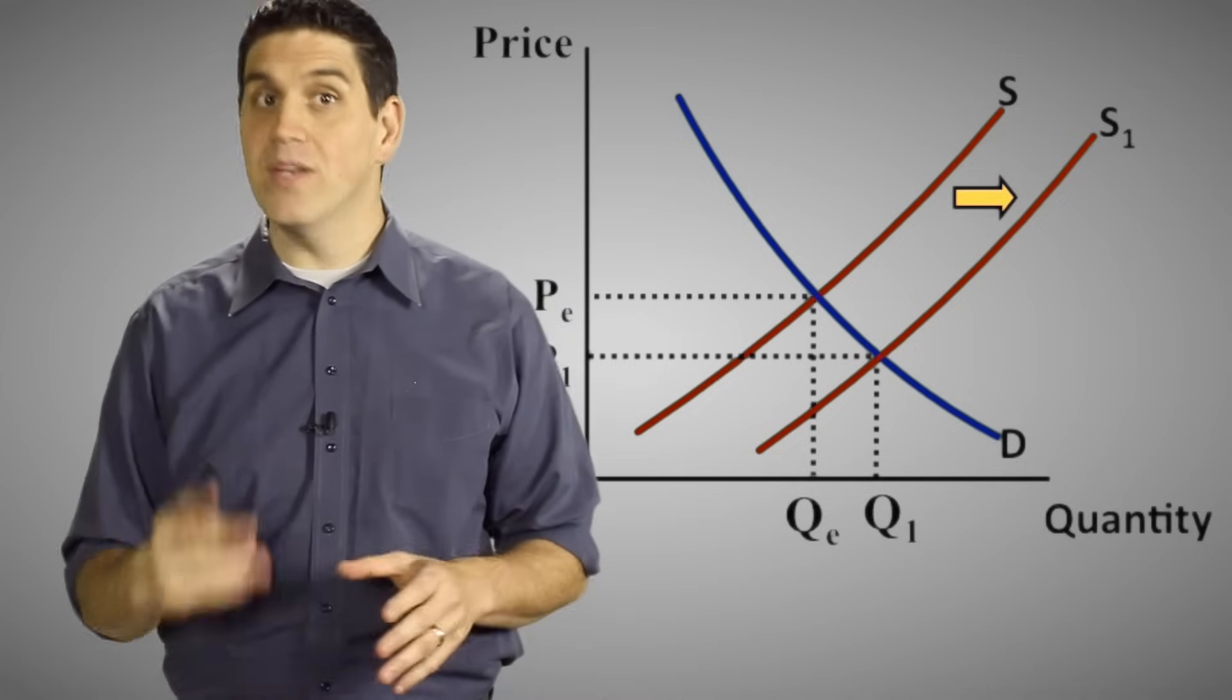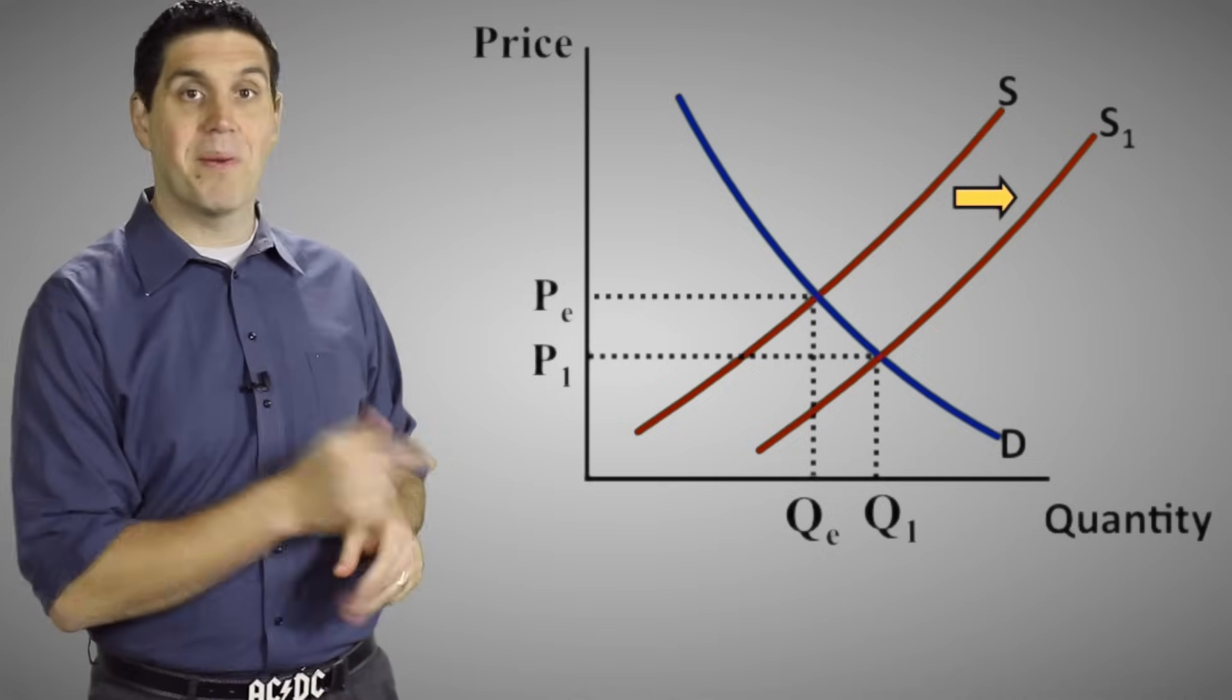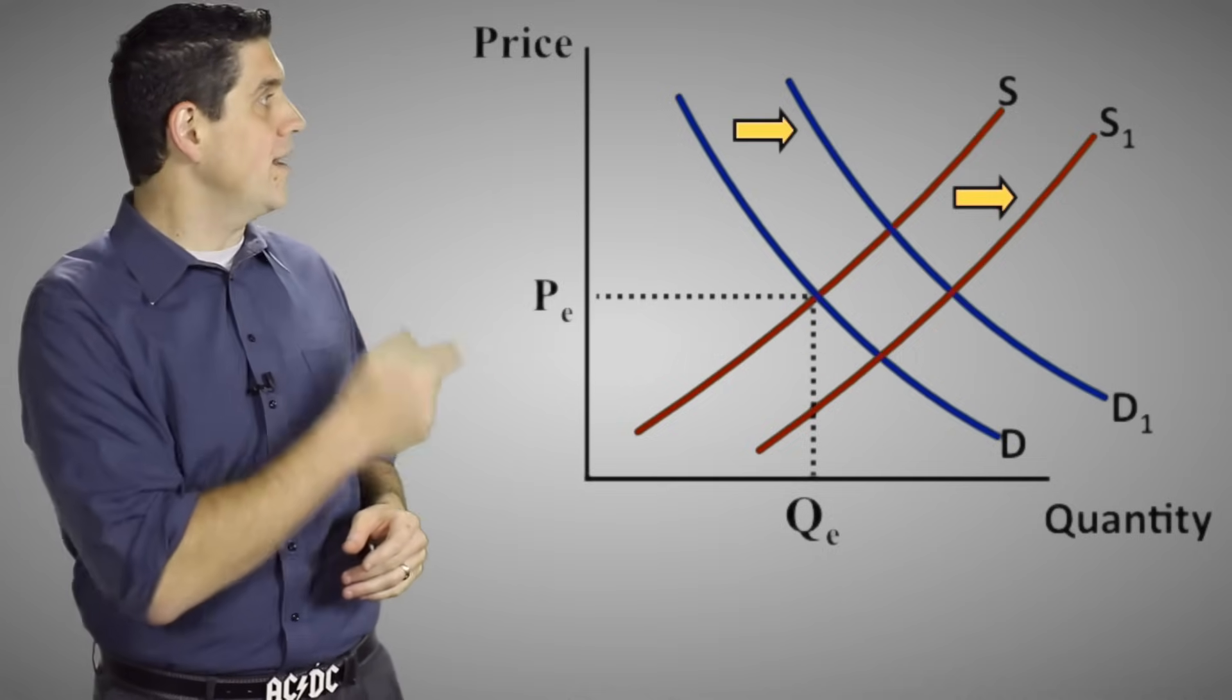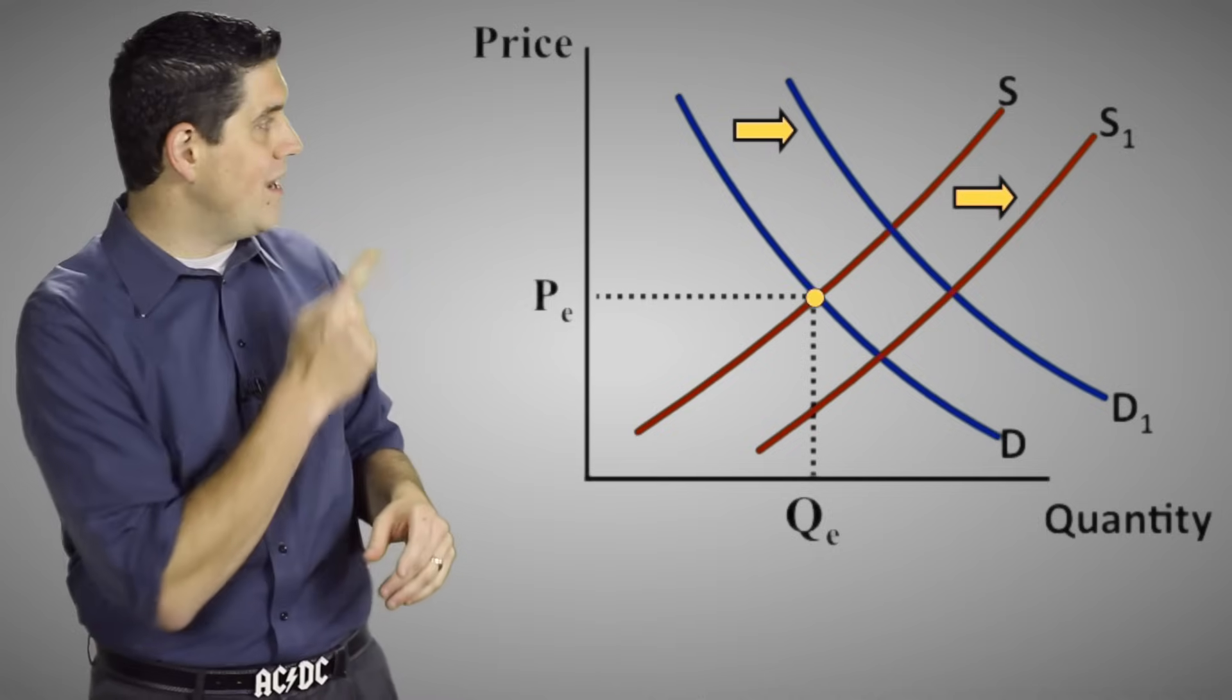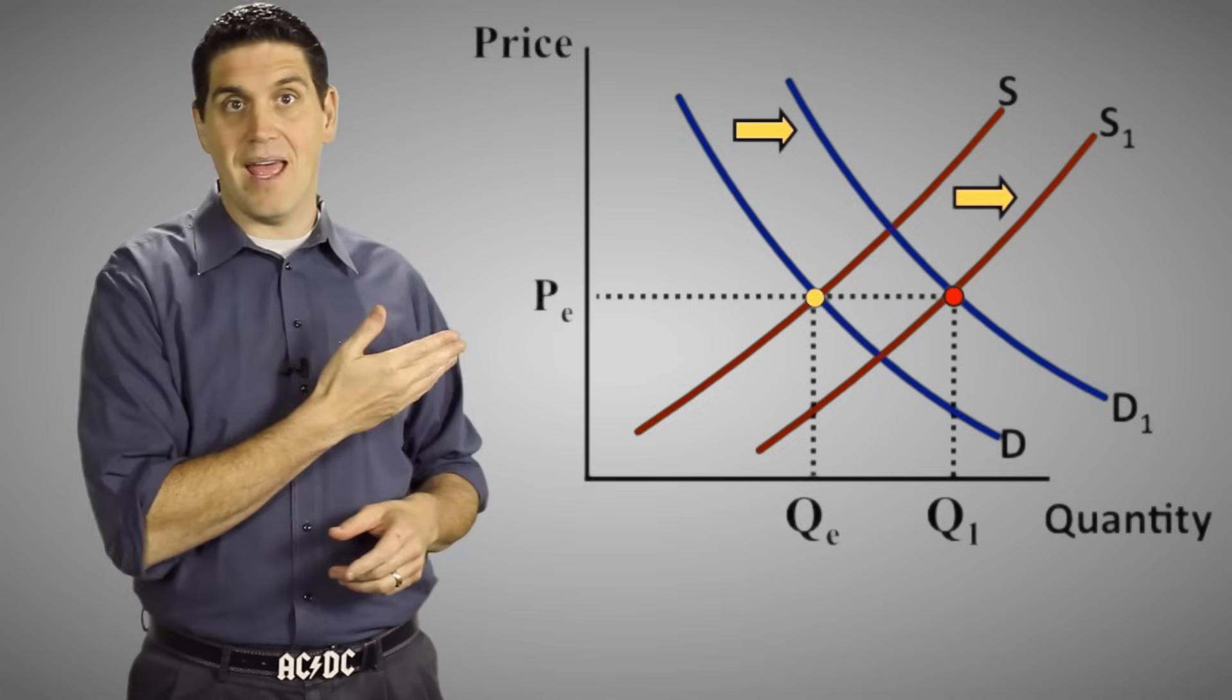Well, it gets a little more tricky when two curves shift at the same time. That's called a double shift. So let's say the supply increases, but at the same time the demand also increases. So supply shifts to the right and demand shifts to the right. We started here and we ended up right here. It looks like the quantity increased and the price stayed the same, but that's not quite right.